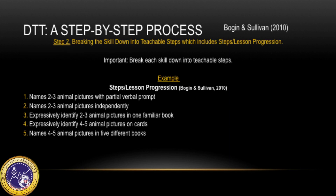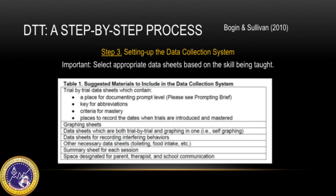Step two is breaking the skill down into teachable steps, which includes steps or lesson progression. DTT is very significant in breaking skills down into teachable steps. The article from Ogin and Sullivan provides an example of how steps are broken down to teach identifying animals. Step three is setting up the data collection system. It is very important, depending on the skill being taught, to pick the appropriate data sheet that will measure correctly and accurately the skill towards criterion. The article provides a table of suggested materials to include in your data collection system.